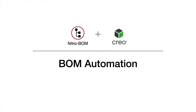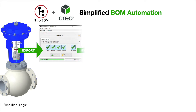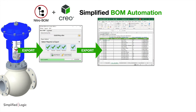One of our most popular automation tools is focused on bill of materials automation — it's called NitroBOM. NitroBOM basically simplifies the BOM automation process by helping extract that data from your Creo assemblies to a native Excel file.